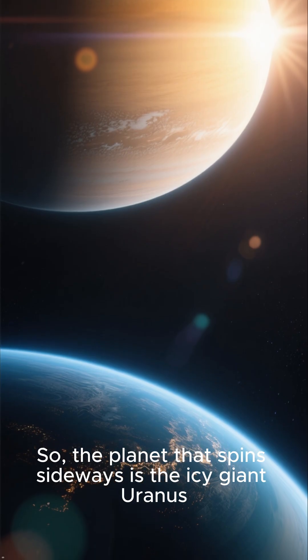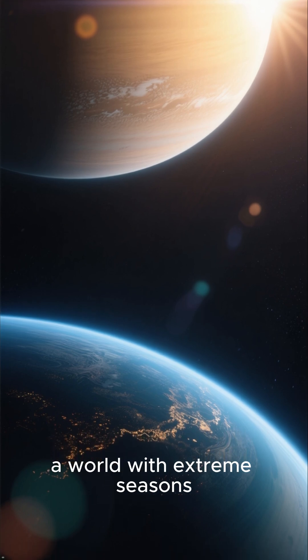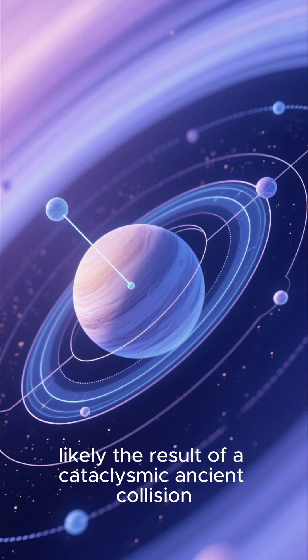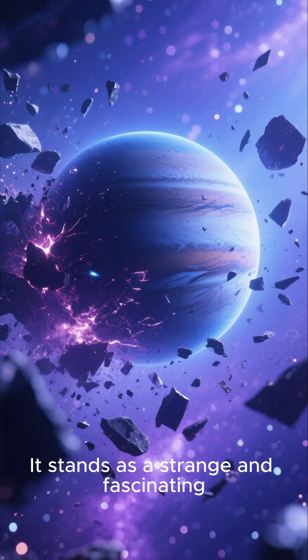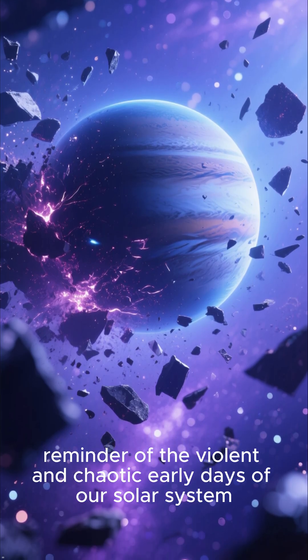So, the planet that spins sideways is the icy giant Uranus, a world with extreme seasons and a rotation axis tilted almost parallel to its orbital plane, likely the result of a cataclysmic ancient collision. It stands as a strange and fascinating reminder of the violent and chaotic early days of our solar system.